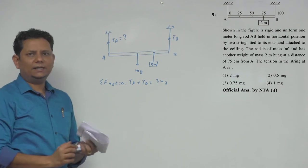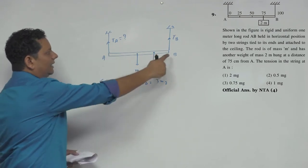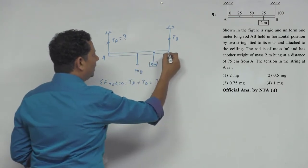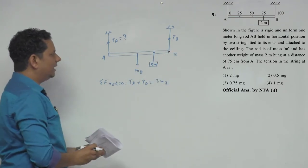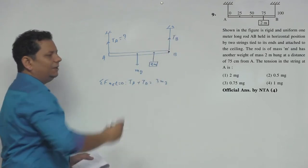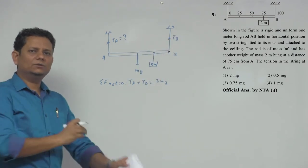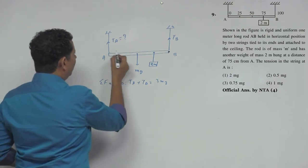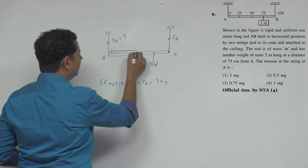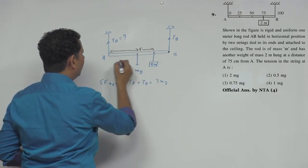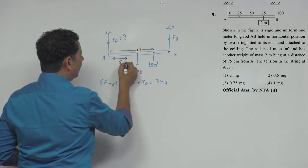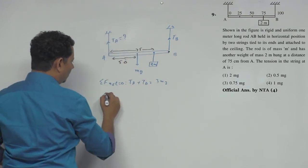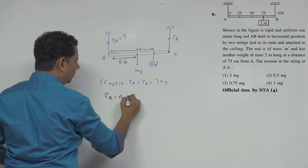For the second equation, we write the torque equation. Since we only need to find TA, we can take the torque about point B. The advantage of taking torque about B is that we do not need to worry about TB at all. Looking at the data: the total length is 100 cm, the weight 2M is at 75 cm from A, so it is 25 cm from B. The center of mass of the rod is at 50 cm from either end. Taking torque about B equal to 0: